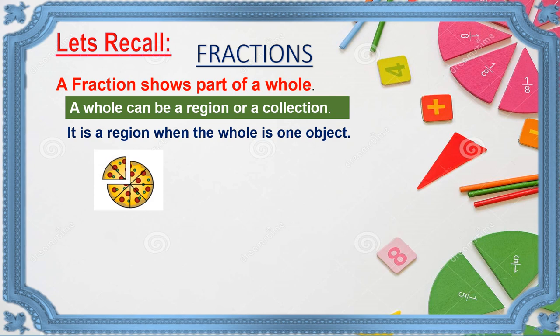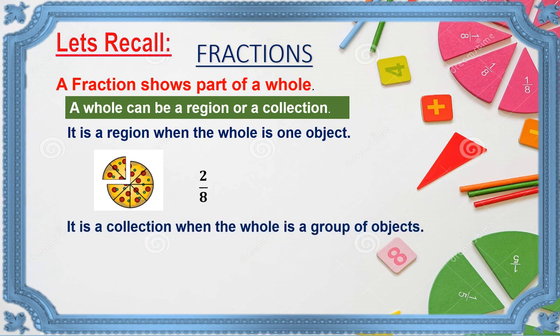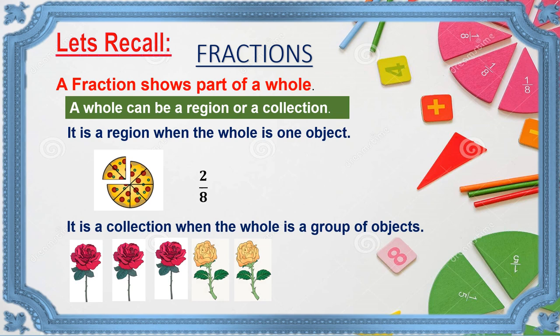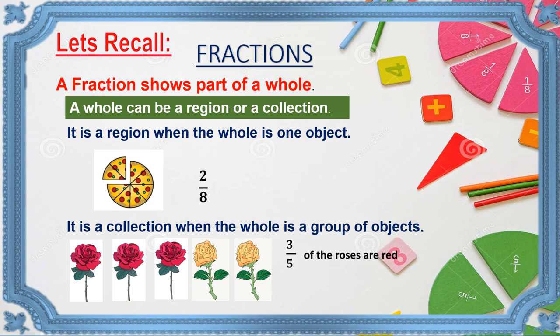So what will be the fraction? Two-eighths. Now let's check out what is a collection. It is a collection when the whole is a group of objects. Here I have a collection of roses. There are five flowers; out of that, three are red. So three-fifths of the roses are red. And two-fifths of the roses are yellow.